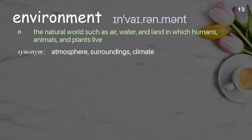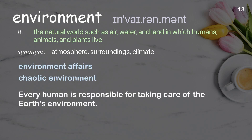Environment: The natural world such as air, water, and land in which humans, animals, and plants live. Examples: environment affairs, chaotic environment. Every human is responsible for taking care of the Earth's environment.